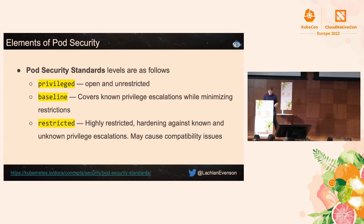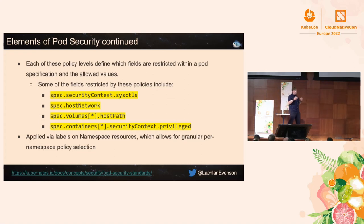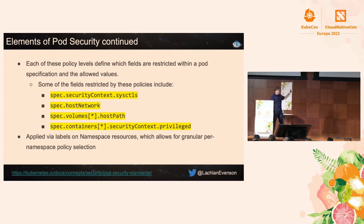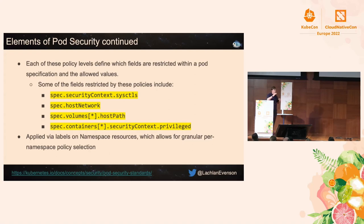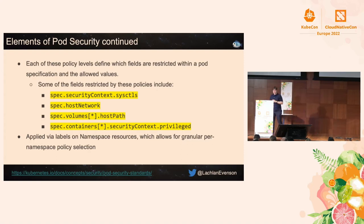The standards are well documented. Some example fields covered include spec.securityContext and spec.hostNetwork — there is a wide range of pod specification fields defined. They are applied per namespace, which allows granular levels of security standards based on your needs. You may not want to apply restricted to the kube-system namespace, for example, but you may want to apply it to your default workload namespace.